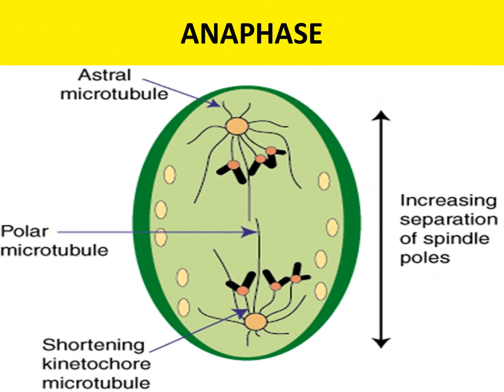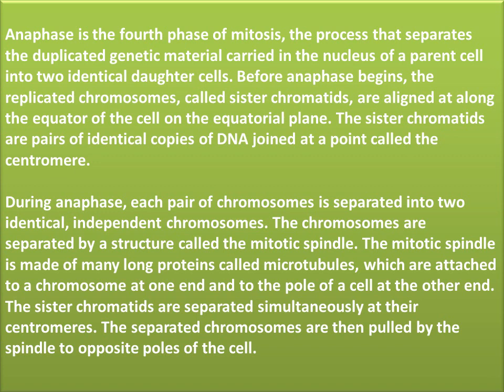The fourth phase is anaphase. Before anaphase begins, the replicated chromosomes called sister chromatids are aligned along the equator of the cell on the equatorial plane. The sister chromatids are pairs of identical copies of DNA joined at the centromere. During anaphase, each pair of chromosomes is separated into two identical independent chromosomes by a structure called the mitotic spindle, which is made of long proteins called microtubules attached to a chromosome at one end and to the pole of the cell at the other. The sister chromatids are separated simultaneously at their centromeres and pulled to opposite poles of the cell.